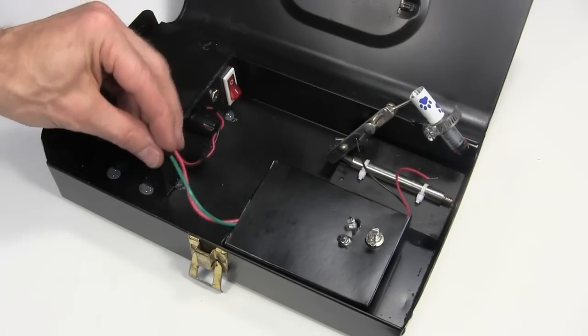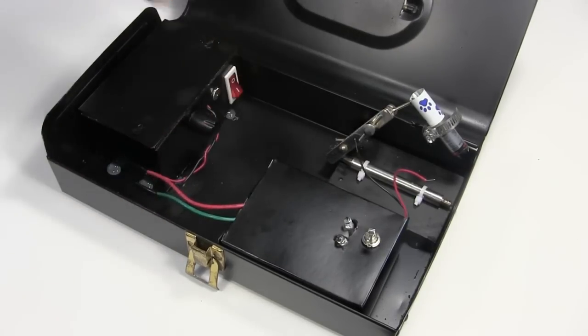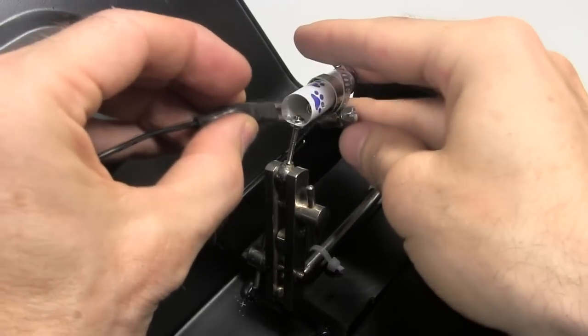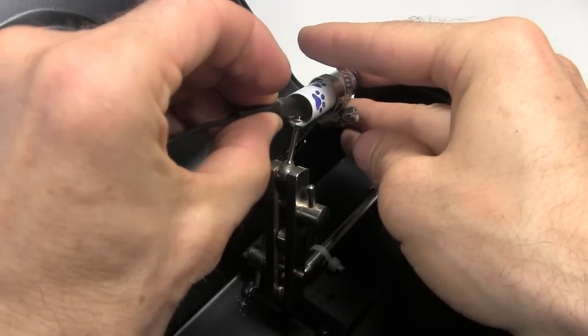The output of the amplifier is then connected to the low voltage side of the transformer. Connecting to the laser is easy.